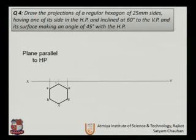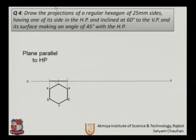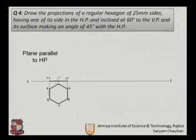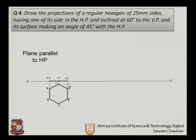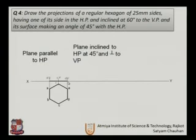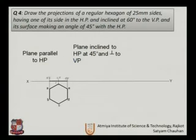By projecting each point, the plane in the first position is on the VP. The front view will be on the XY line: A and B give the same point, F and C are in the middle, and E and D give the same point on the XY line.